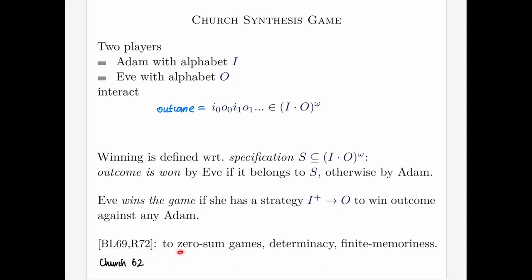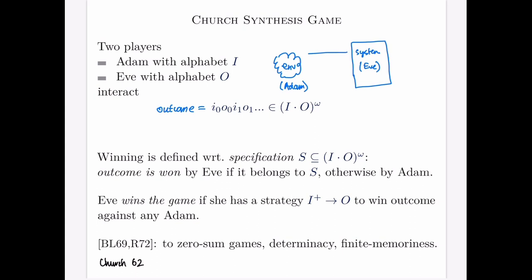Eve wins the game if she has a strategy to pick output letters depending on input letters to win every outcome against every Adam. The Church Synthesis problem was introduced by Church in 1962 and later solved by Büchi and Weber and Rabin in the early 70s. They solved it by reducing to zero-sum finite games, and they also showed determinacy and finite memoriness.